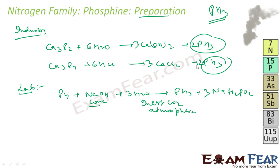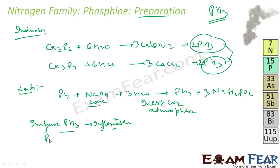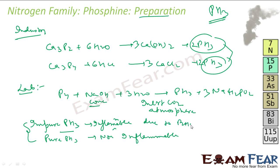So this is how you prepare Phosphine. The reason I'm stressing on impure versus pure Phosphine is: impure Phosphine is actually inflammable. But pure Phosphine is non-inflammable — there is a huge difference. Impure Phosphine becomes inflammable due to P2H4 or Phosphorus vapors. Purifying Phosphine is therefore a critical task because impure Phosphine can catch fire.